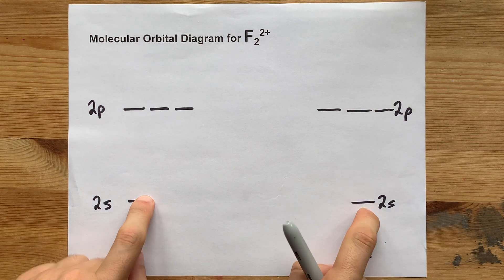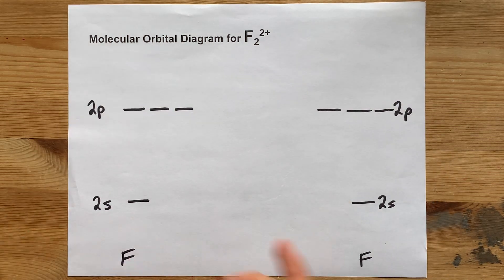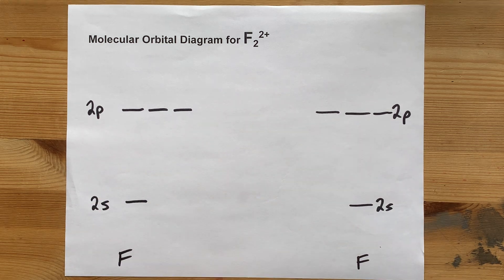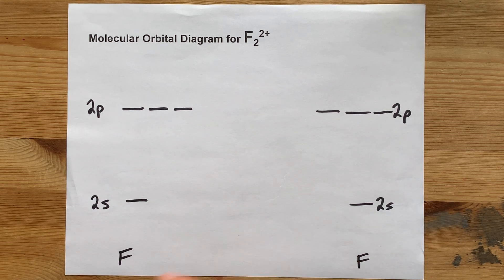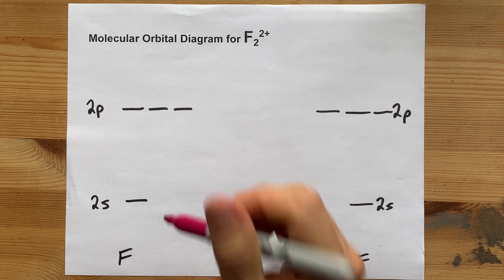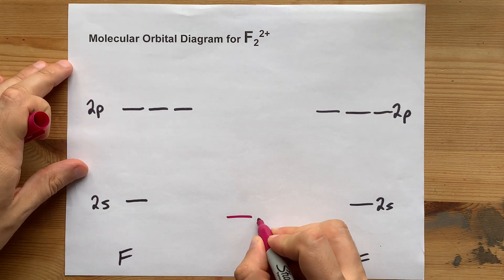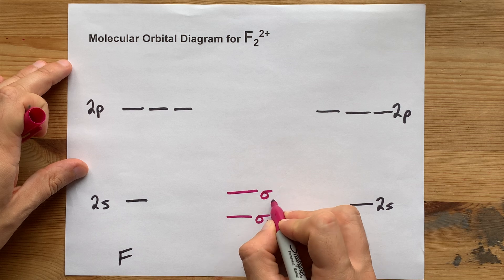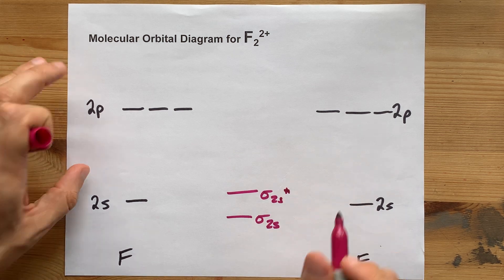I tried to put these at the same height because they're the same atom. What happens when the 2s atomic orbitals overlap? You get two molecular orbitals: a sigma 2s bonding orbital and a sigma 2s anti-bonding orbital.